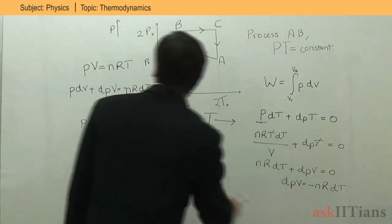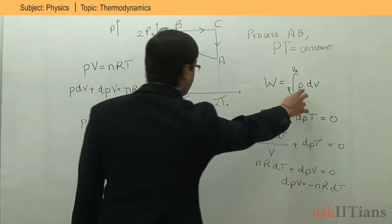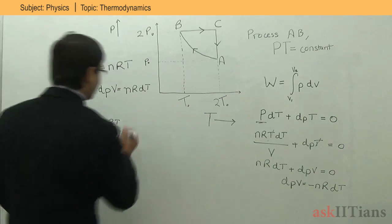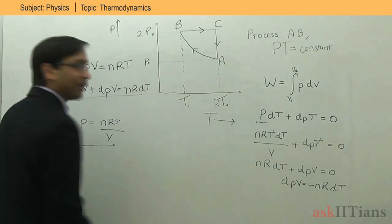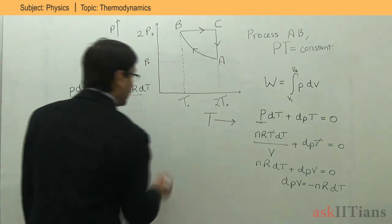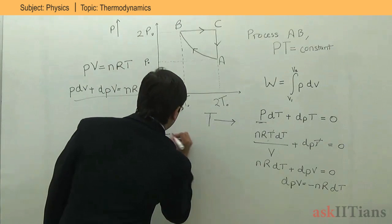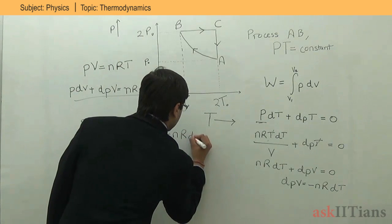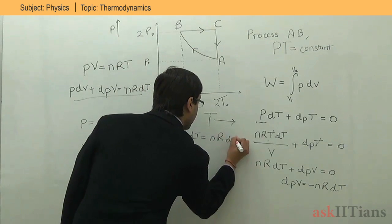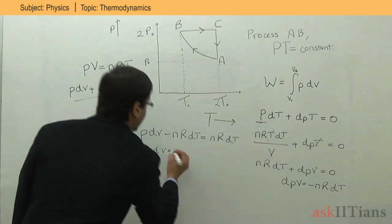Substituting V dP = −nR dT into the differentiated ideal gas equation P dV + V dP = nR dT, we get P dV − nR dT = nR dT. Therefore, P dV = 2nR dT.